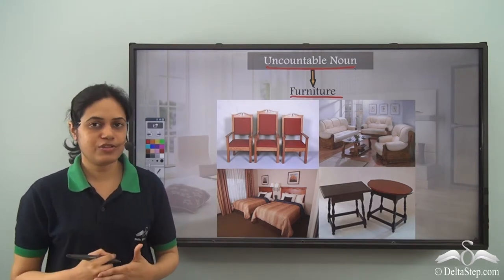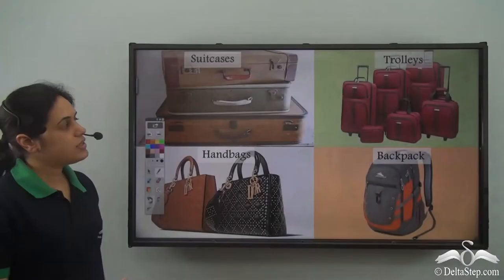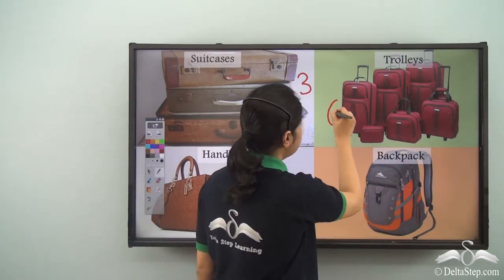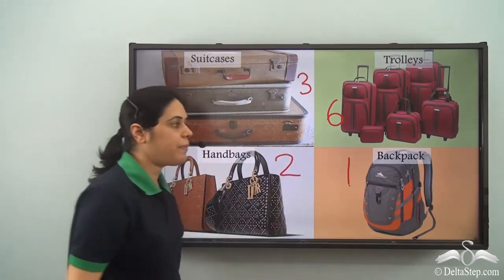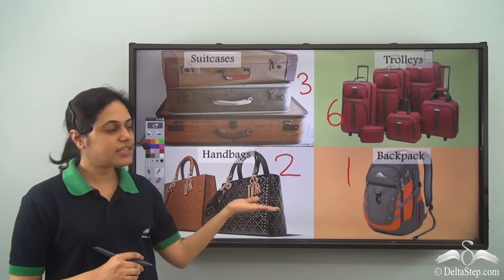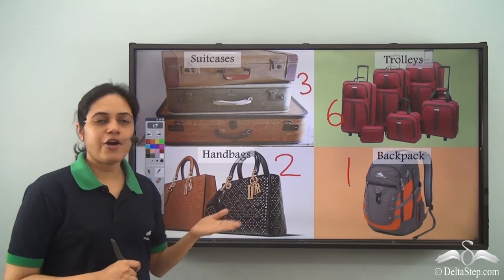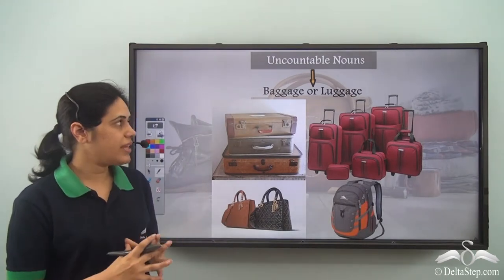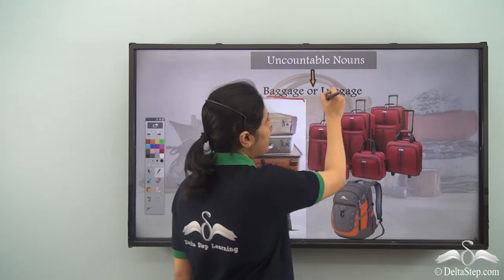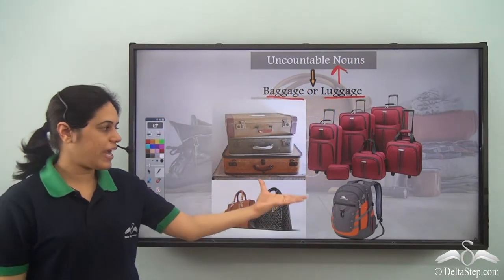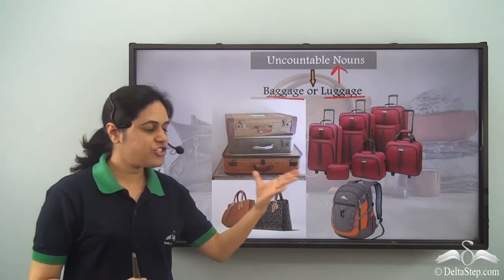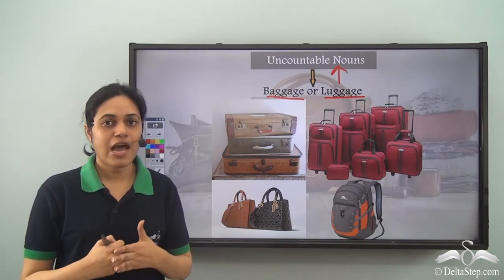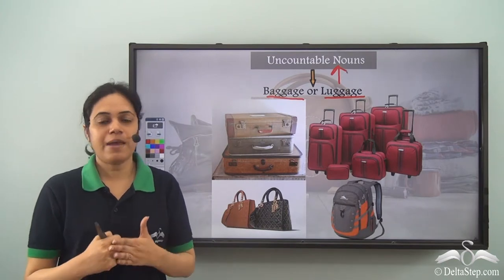Similarly, there are three suitcases here, six trolleys, two handbags and one backpack. In each case we get an answer to 'how many,' so these are all countable nouns. But when they come together, they are referred to as baggage or luggage, which are uncountable nouns. We say 'I am not carrying much luggage' or 'I am not carrying much baggage.' We never say 'I am not carrying many luggage.'